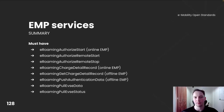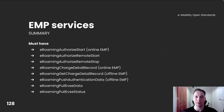To sum up this part, we have covered all the services from the EMP perspective. When it comes to mandatory services and operations, we may divide it into Online EMP and Offline EMP. Online EMP must implement eRoaming authorized start and eRoaming charge detail record operations. Offline EMP must implement eRoaming get charge detail record and eRoaming push authentication data. Both types of EMP must implement eRoaming authorized remote start, eRoaming authorized remote stop, eRoaming pull EVSE data, and eRoaming pull EVSE status. Online EMP may also optionally use eRoaming get charge detail record and eRoaming push authentication data operations.